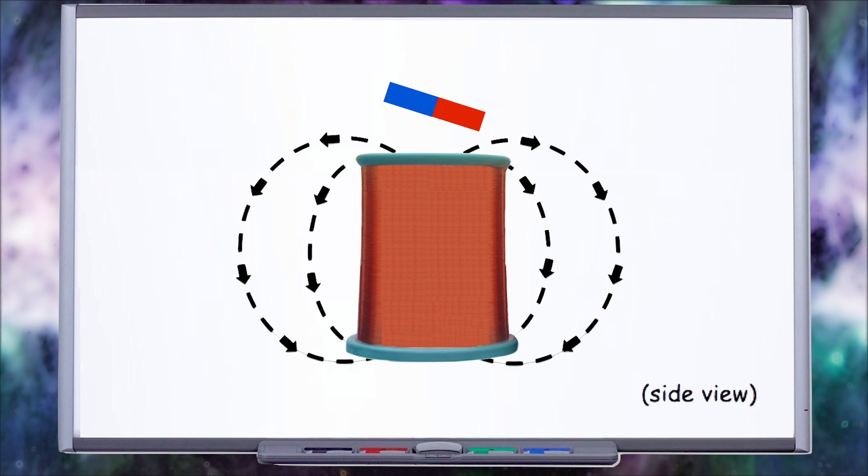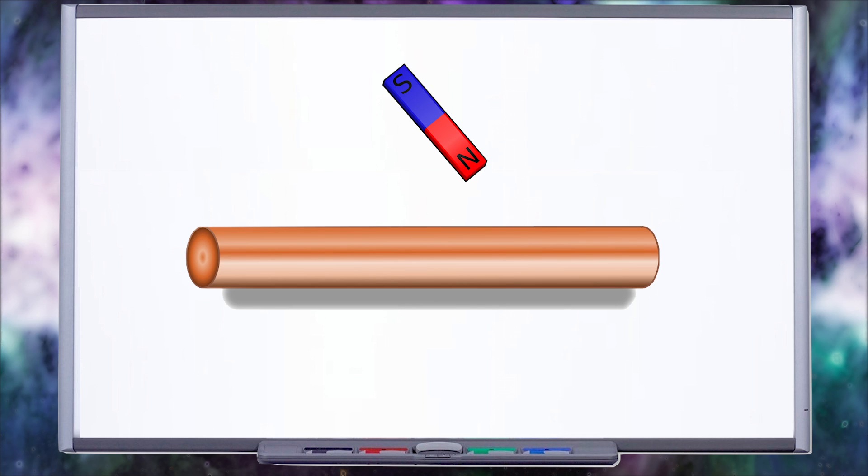A generator works opposite to a Newman motor. In a Newman motor a current in a copper coil creates a magnetic field, whereas in a generator, a changing magnetic field induces a current which can then be stored as energy. The magnet induces a current by pushing the electrons in the copper wire. The magnetic field must keep changing otherwise the electrons will move a small bit and then stop moving.